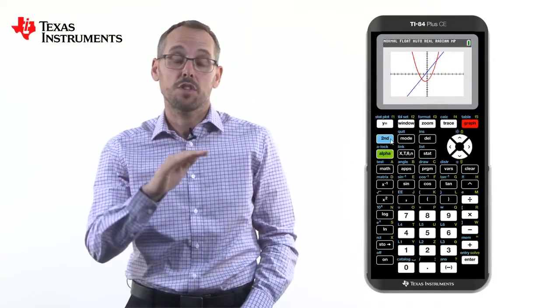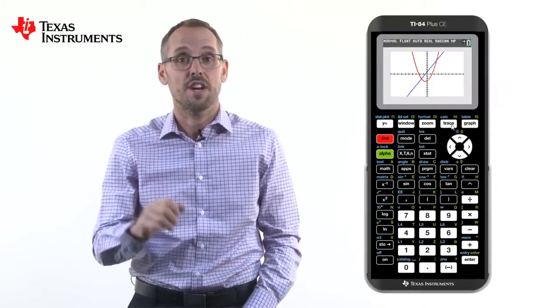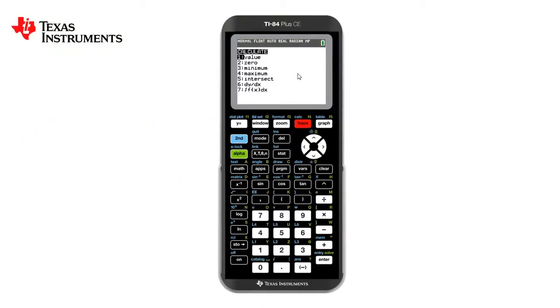This is found along the top by pressing second trace. As you can see on the calculate screen, we have seven choices. This time we'll choose value by pressing one or enter. We can type in any x value that we require and this will give us the coordinates at that value. To find it on the other graph, we simply press the arrow down key to find the corresponding value on the other graph.